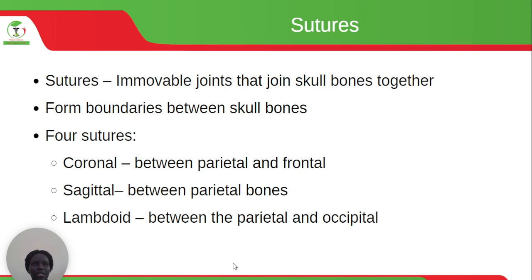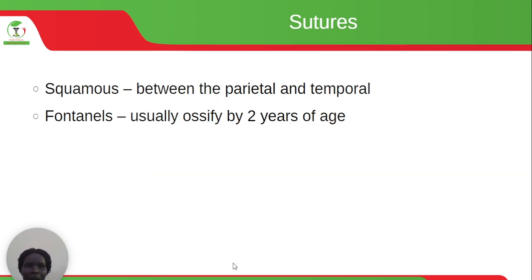Let's look at sutures. Sutures are immovable joints that join the skull bones together and form boundaries between the skull bones. There are four sutures on the skull. We have the coronal suture, which is found between the parietal and the frontal bones. Then the sagittal suture, which is found between the two parietal bones. Then the lambdoid suture, which is found between the parietal and the occipital bones. Then the squamous suture, which is found between the parietal and the temporal bones. The fontanels are usually ossified by the age of two.